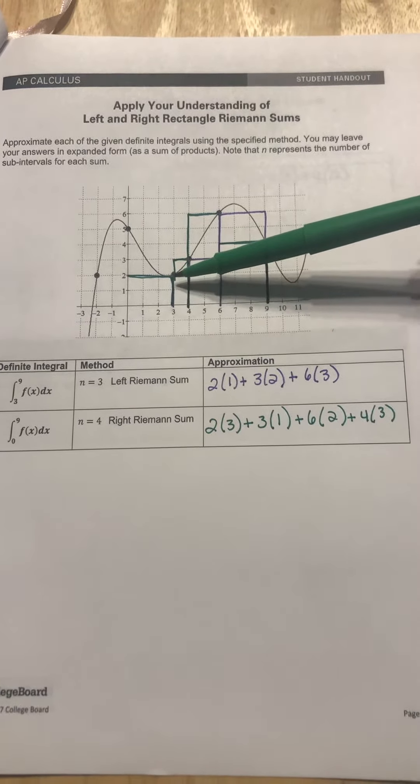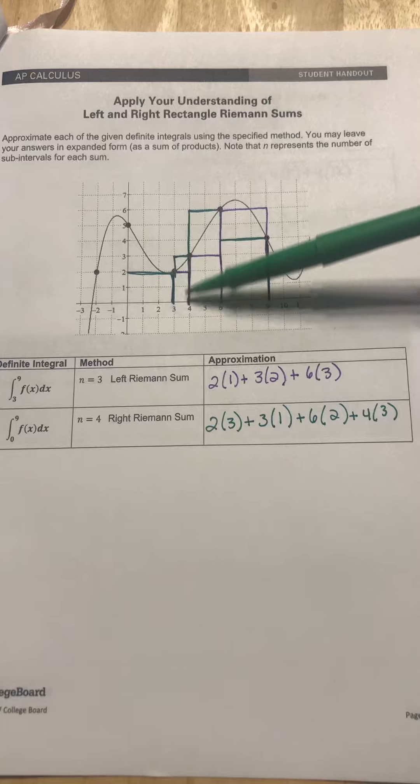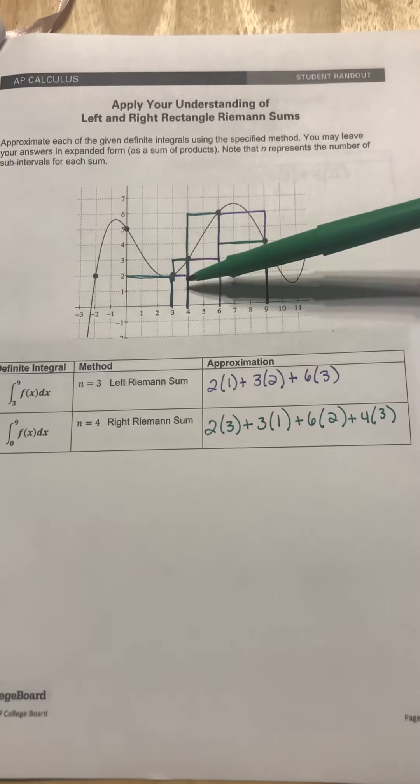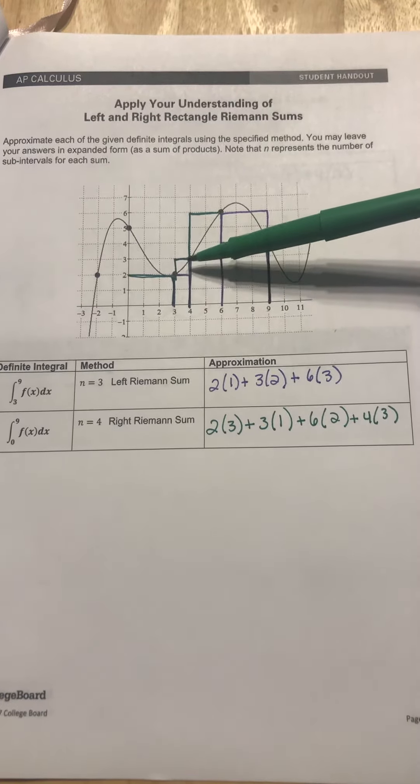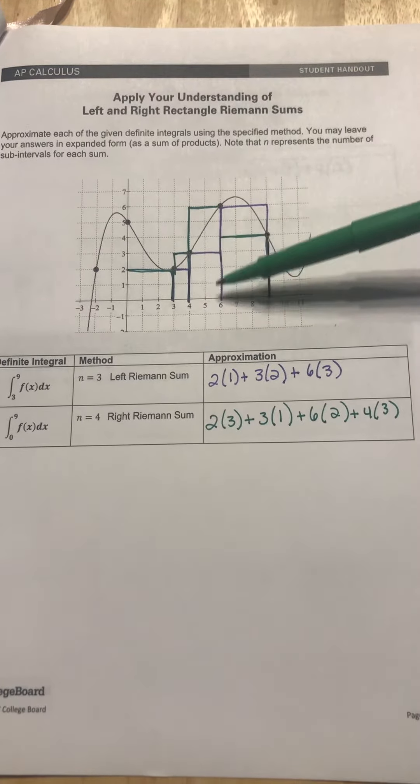So we go up here. Three has a height of two and you go over one, so that's two times one. And then you're going to do three. It goes up to a height of three and that is two wide.